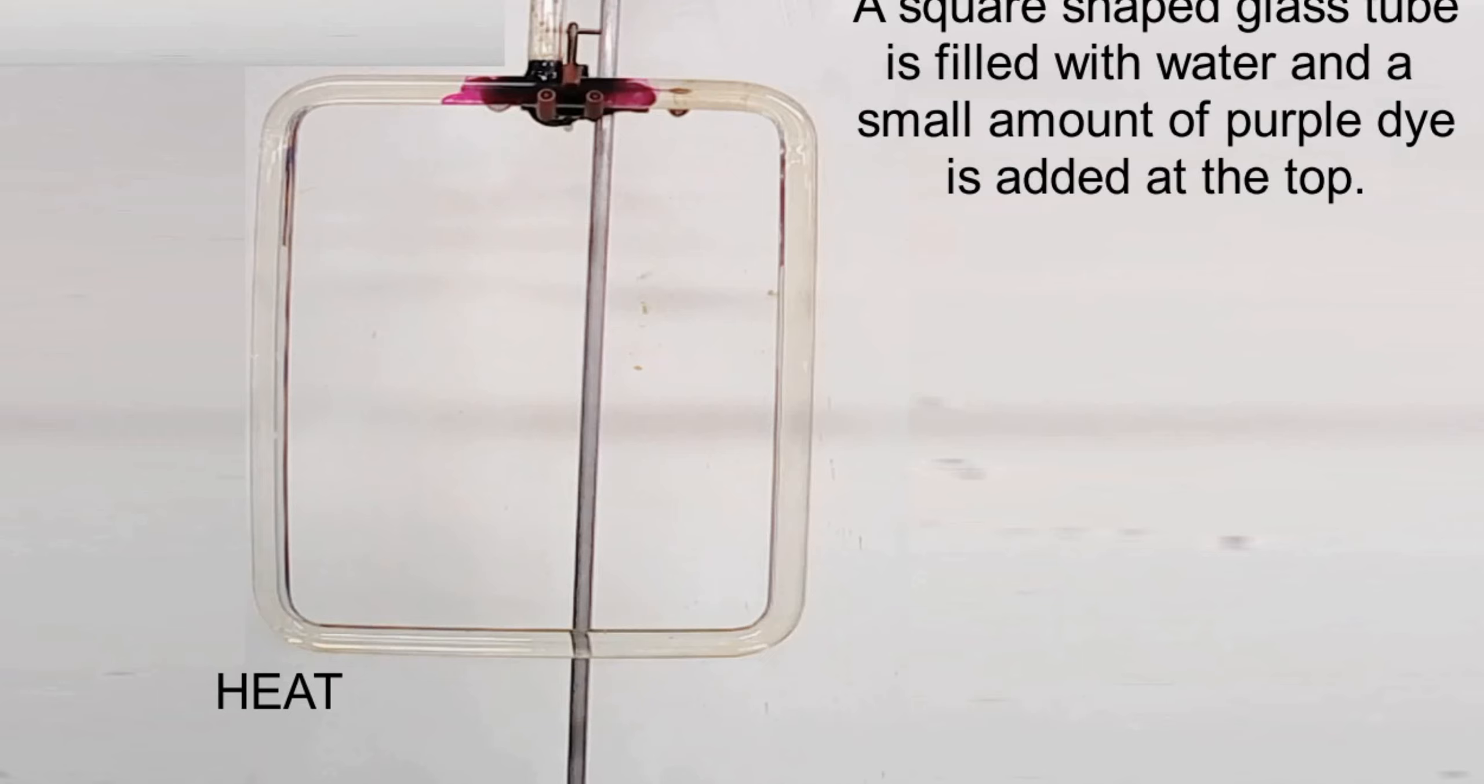Okay, we are going to be looking at the way in which heat moves, and the first one that we're going to look at is something called convection. So let's have a look at this video. A small square-shaped glass tube is filled with water and a small amount of purple dye.